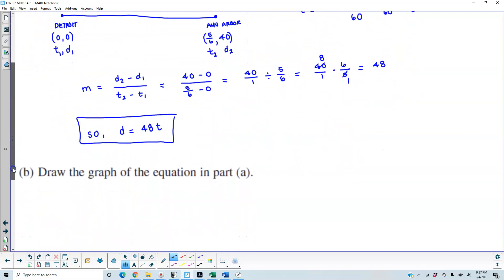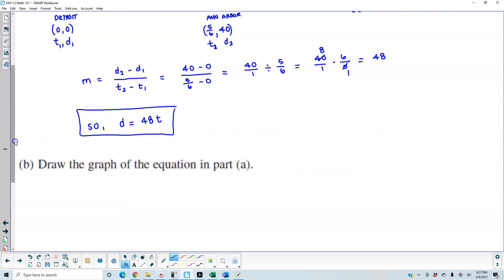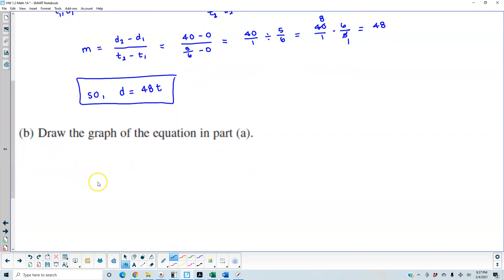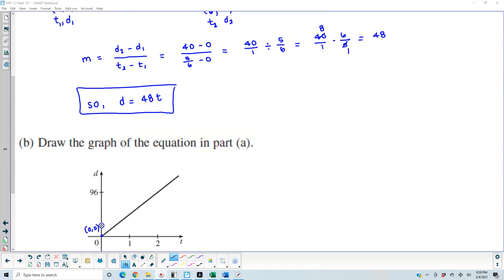Now we want to be able to graph our function, which is D equals 48T. We can either put it in Desmos, but we're going to have a linear function that's passing through the origin. Remember that this represents (0, 0), and this line represents the equation from part A.